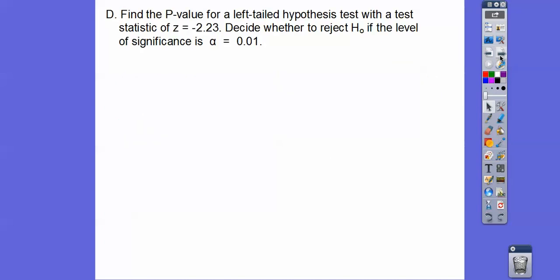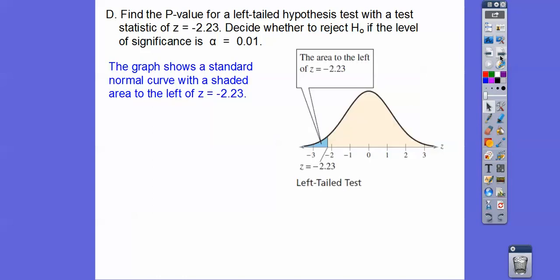So find the p-value for a left-tailed hypothesis test with a test statistic of Z equals negative 2.23. We're going to look up our Z score table and look in the area, the body, to see if it's enough to reject it at the 1% level.